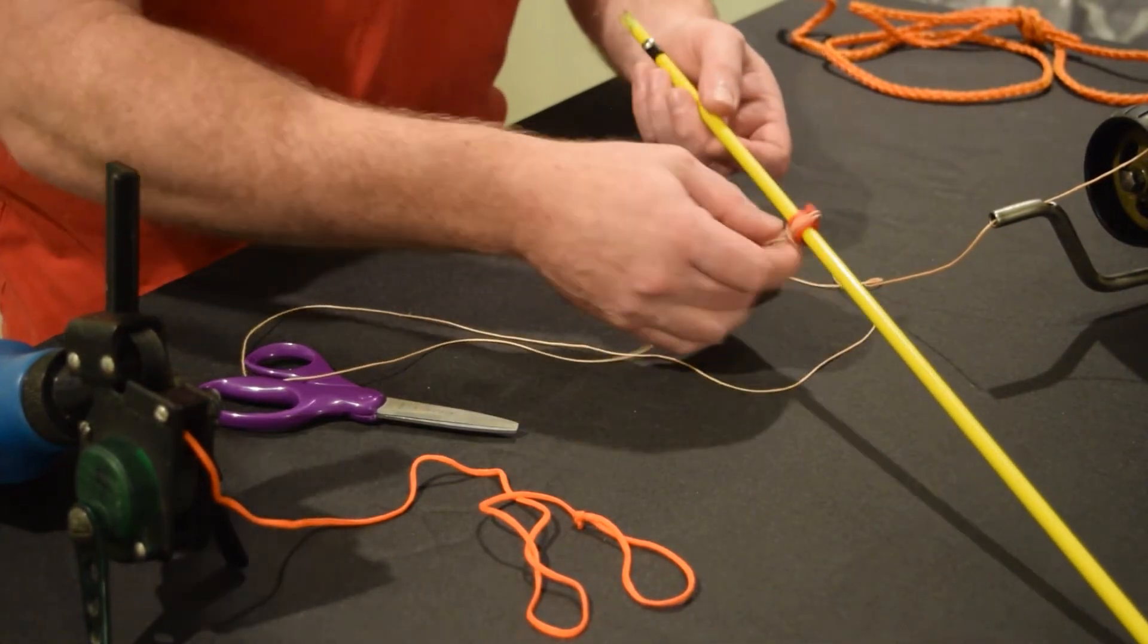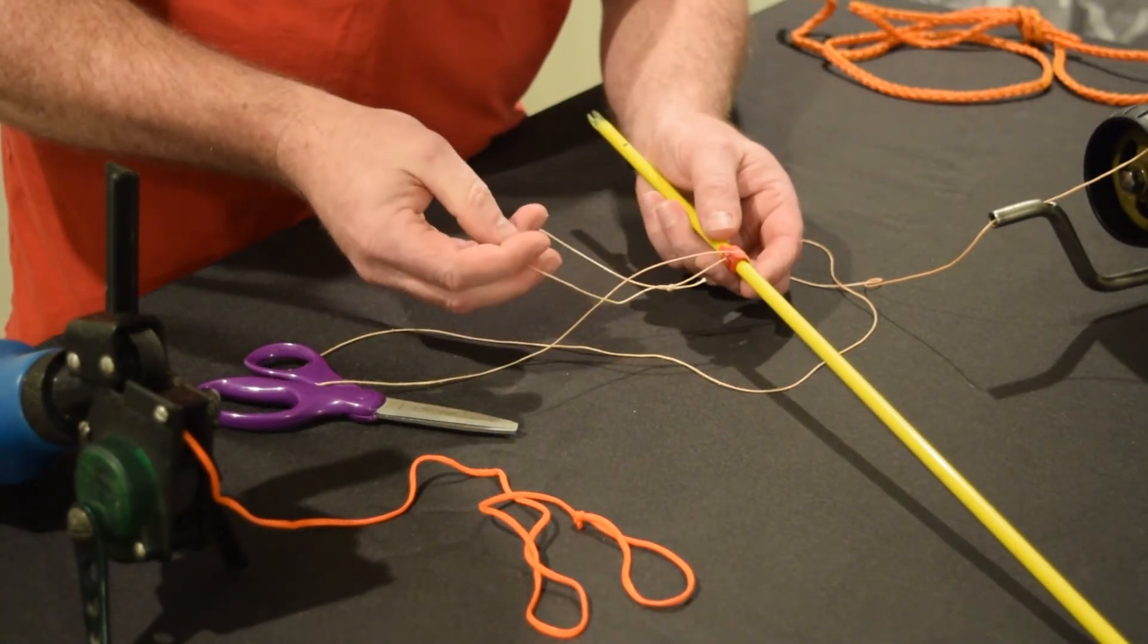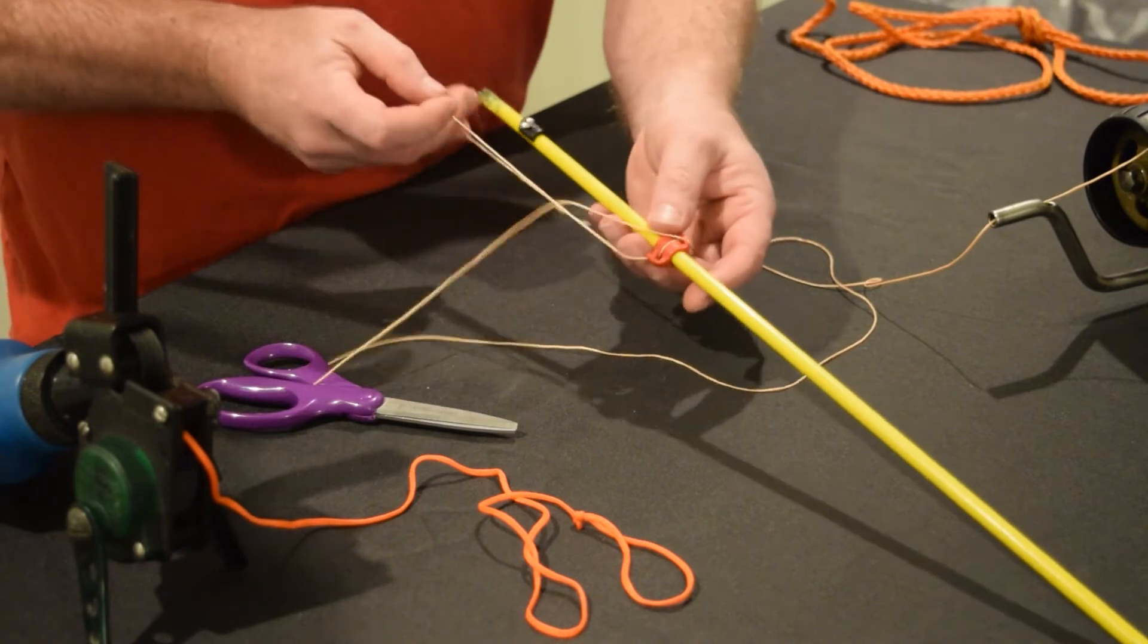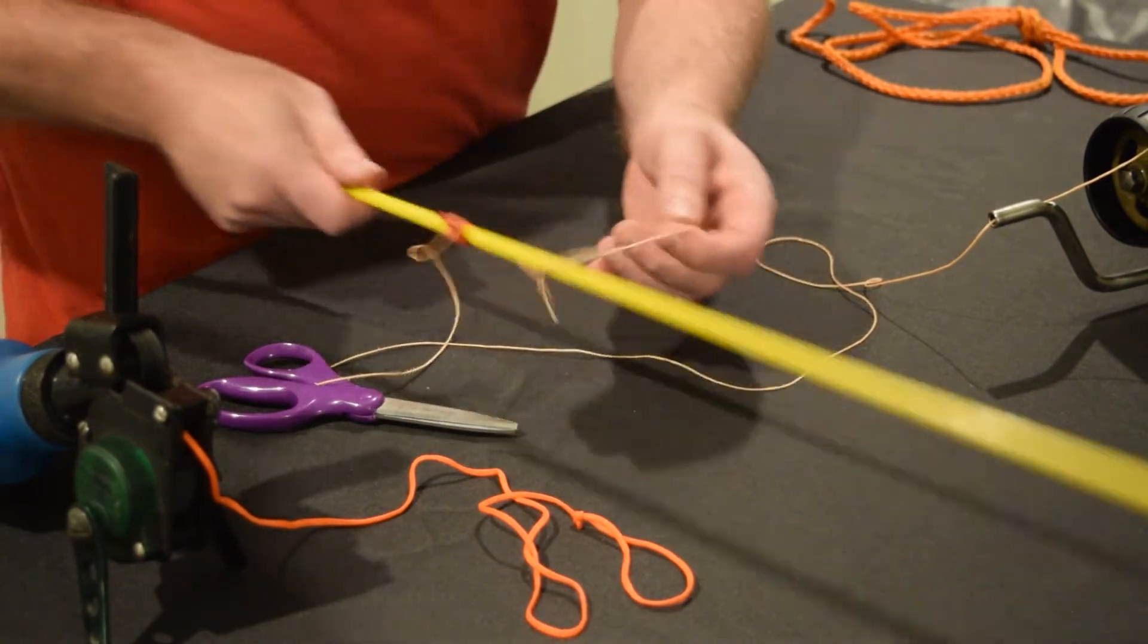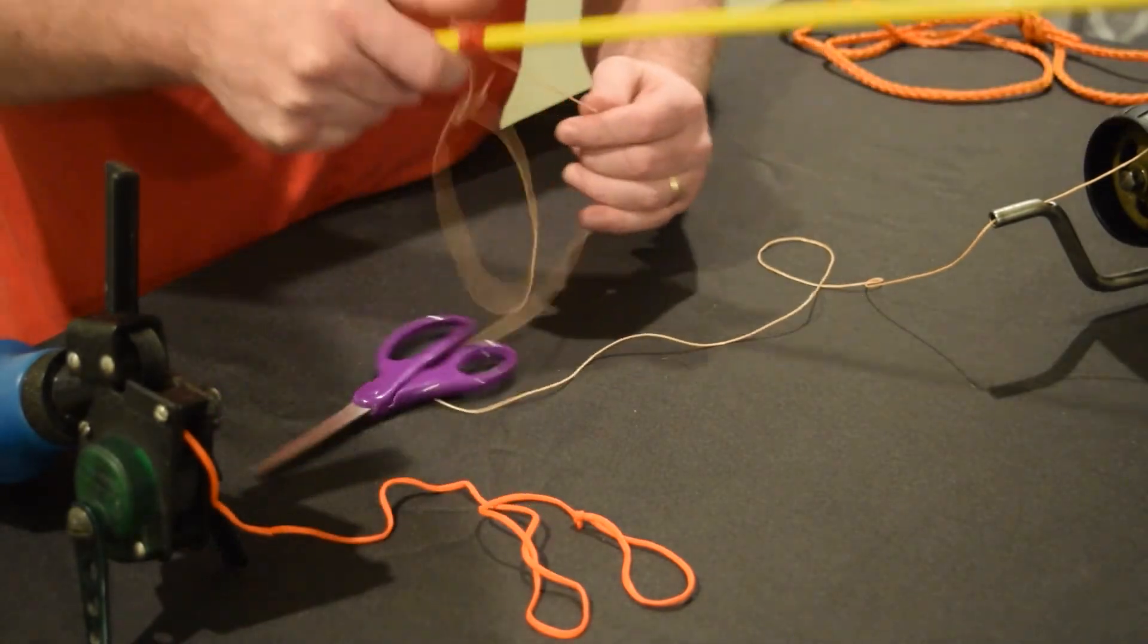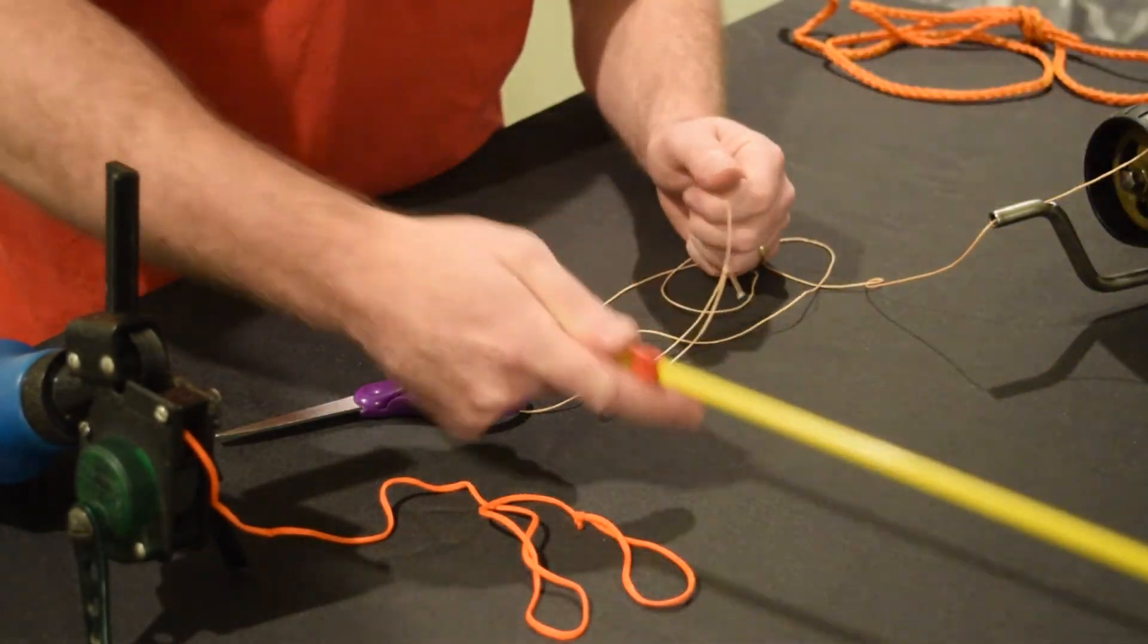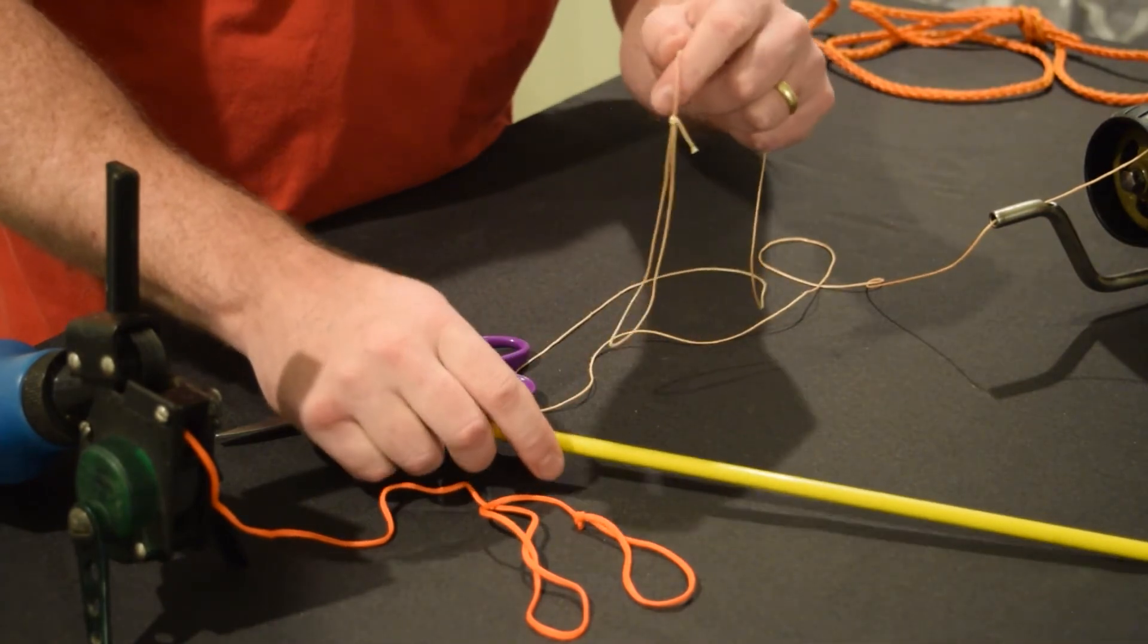To take the arrow back off, loosen the knot back up, work back over the nock end, go back over the tip of the arrow, begin to pull the line. You'll get a little resistance from the knot, but essentially, you'll be able to take the loop back off of the arrow again.